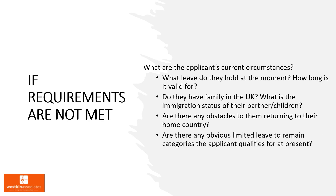So how do we deal with a situation where continuous residence may have been breached? Firstly, it's important to have an accurate overview of your absences and have them calculated correctly. A lot of migrants are unaware that only a full 24-hour absence counts, so this could greatly reduce your total absences. Secondly, we look at mitigating circumstances such as travel restrictions, ill health, or other factors that stopped you from returning to the UK on time.